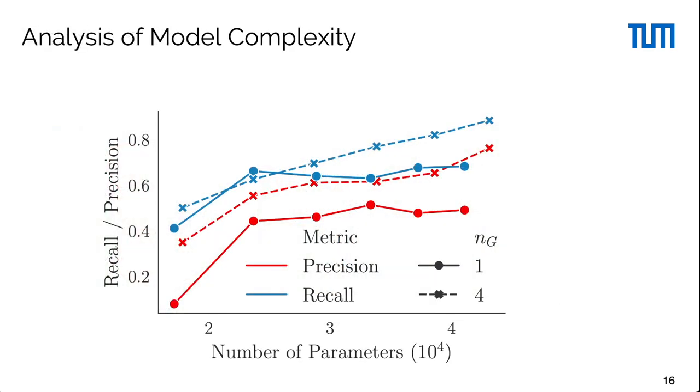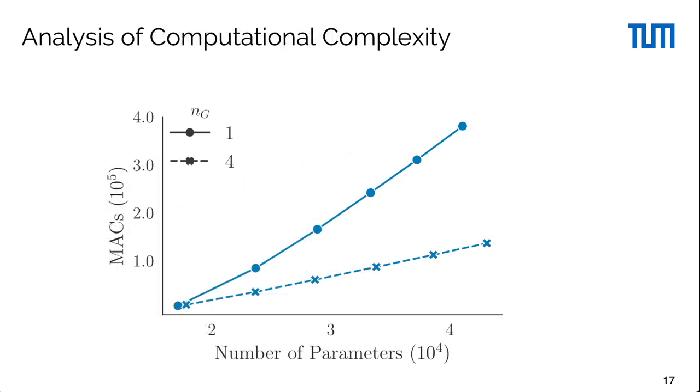Moreover, we show that our multi-generator method achieves better results than the single generator baseline when both models use the same number of parameters. As a consequence, we see that the computational cost for a single trajectory expressed in MACs is significantly lower for MG-GAN compared to the single generator baseline since we only sample one single small generator during inference.